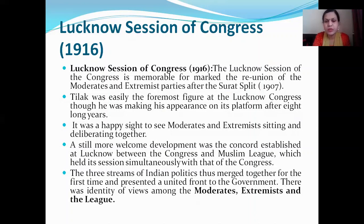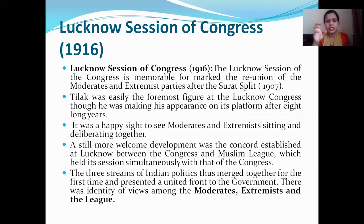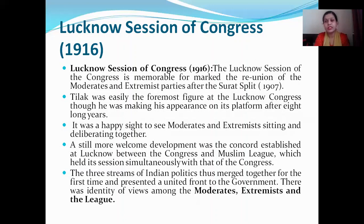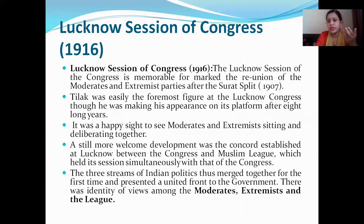The Lucknow session of the Congress is memorable for the marked reunion of the moderates and extremists after the split of 1907. In this Lucknow Congress, three parties came together: the moderates, the extremists, and the Muslim League, which held its session simultaneously with that of the Congress. The three streams of Indian politics thus emerged together for the first time and presented a united front to the government — there was identity of views among the moderates, extremists, and the League.